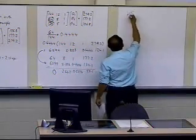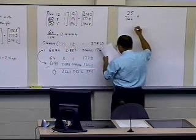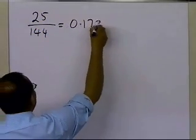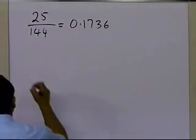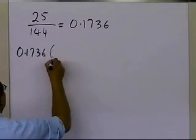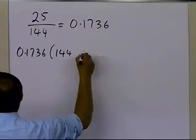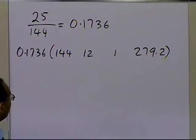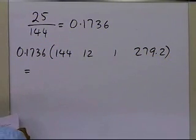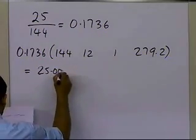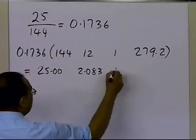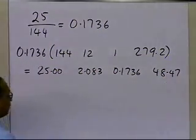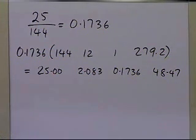So the multiplier is 25 divided by 144, which turns out to be 0.1736. Now what I'm going to do is multiply the first row by 0.1736 so that it makes the third row, first column to be 0, then I subtract this. So when I multiply this, I get 25.00, 2.083, 0.1736, and 48.47. Keep in mind that for simplicity I'm only using four significant digits in my calculations.